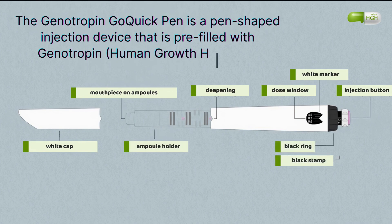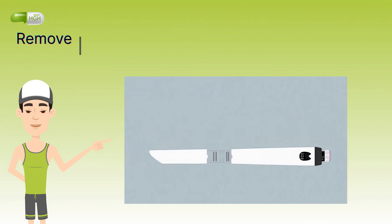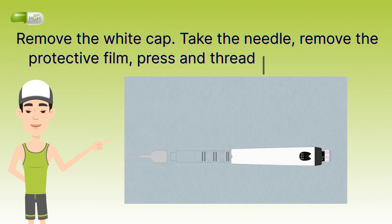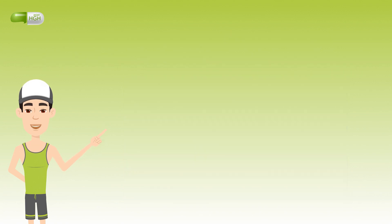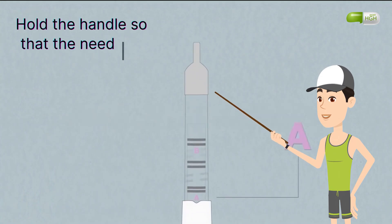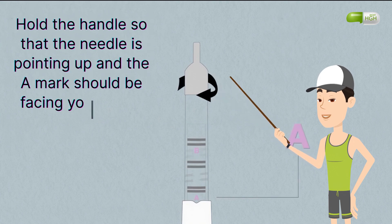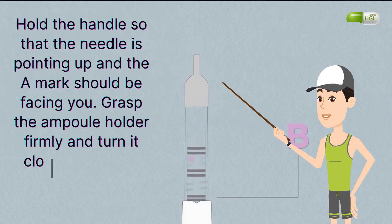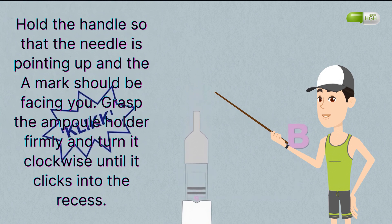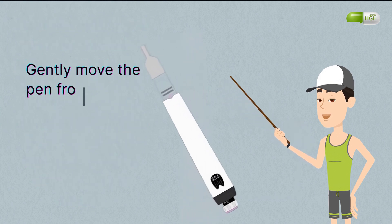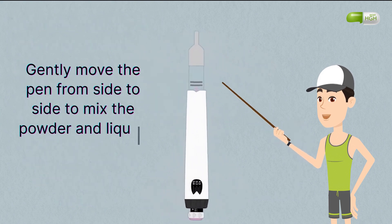Remove the white cap. Take the needle, remove the protective film, press and thread it onto the pen. Hold the handle so that the needle is pointing up and the A mark should be facing you. Grasp the ampule holder firmly and turn it clockwise until it clicks into the recess.